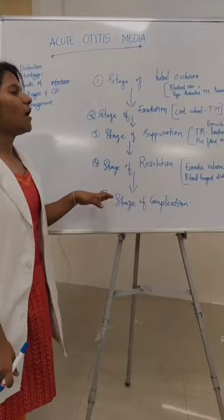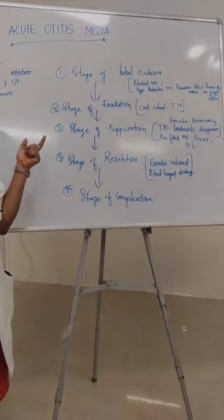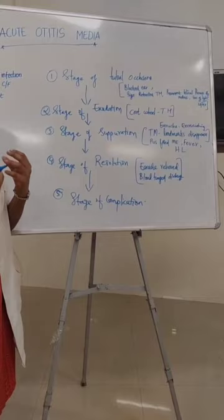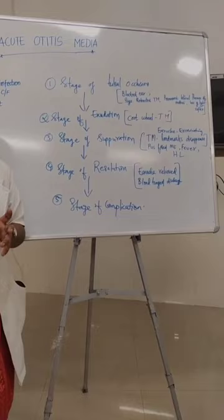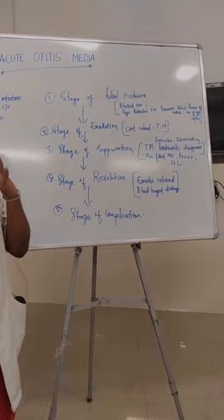In summary: the first stage is characterized by blocked ear and retracted tympanic membrane with prominent landmarks and loss of light reflex. The second stage shows cartwheel appearance of the tympanic membrane. The third stage features exfoliated earache with a bulged-out tympanic membrane, loss of landmarks, fever and hearing loss. The fourth stage of resolution is characterized by blood-tinged discharge and resolution of earache. Finally, there will be a stage of complication if the disease is not treated well.